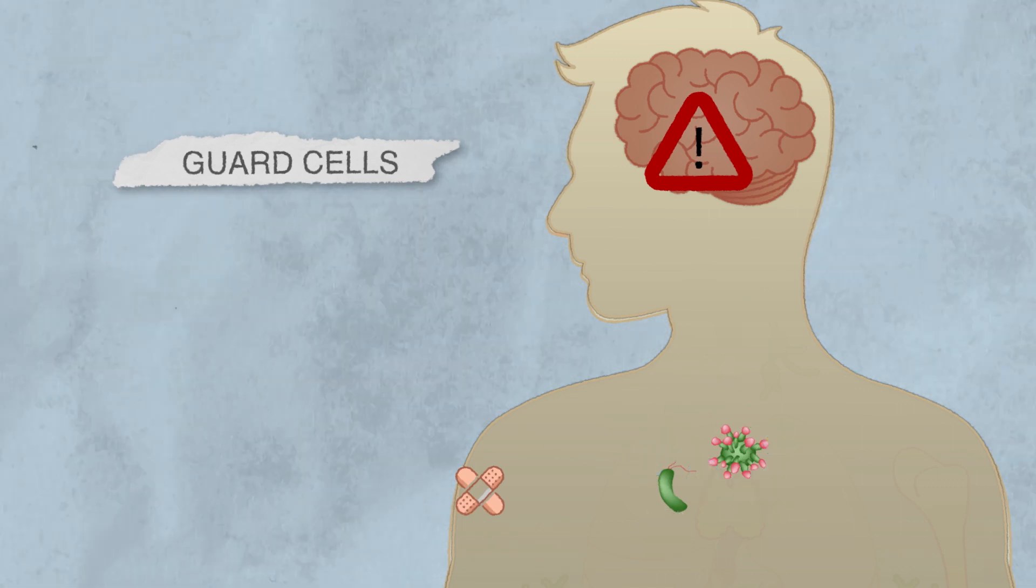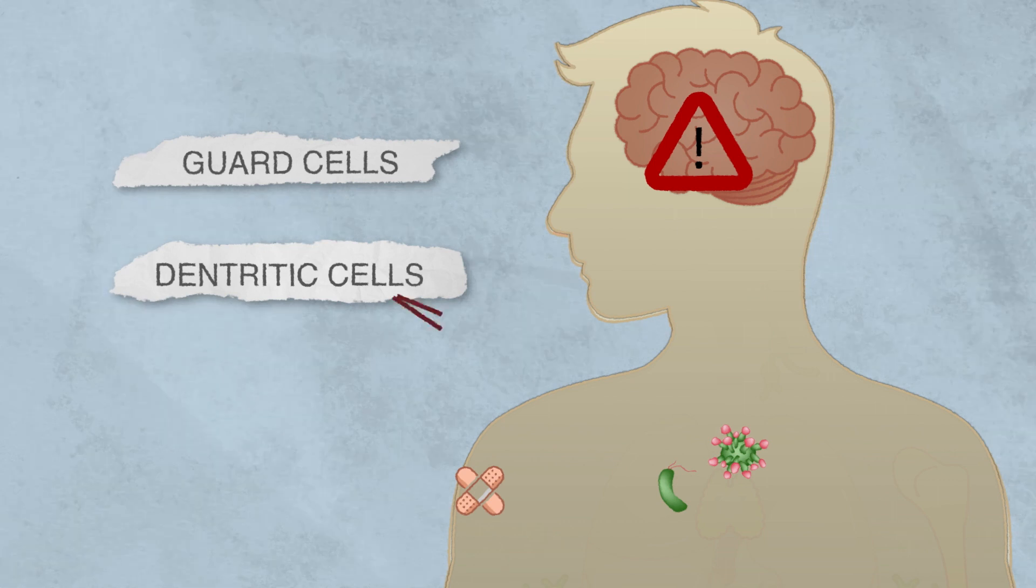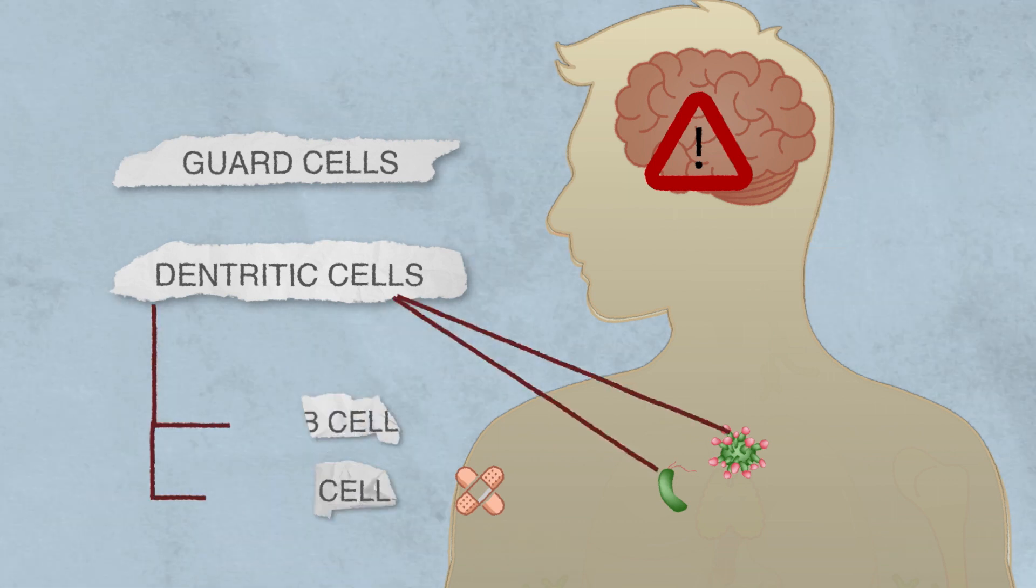If even after this, the situation isn't under control, the brain of the immune system kicks in. The dendritic cells come. They sample the intruders and then help in B and T cell generation.